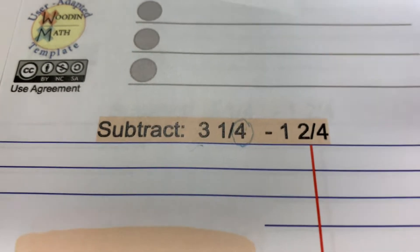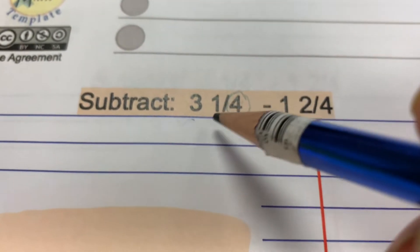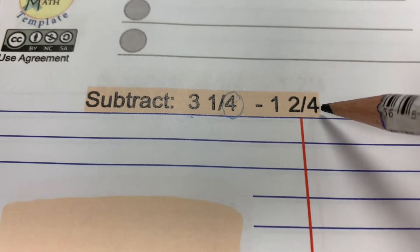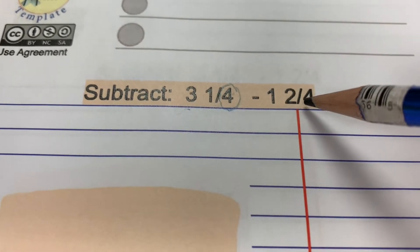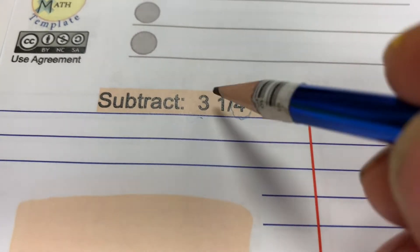Okay, we're going to subtract some mixed numbers. Here it is: three and one fourth minus one and two fourths. Now there's going to be a regrouping step here because I'm trying to get two pieces away and I only have one.